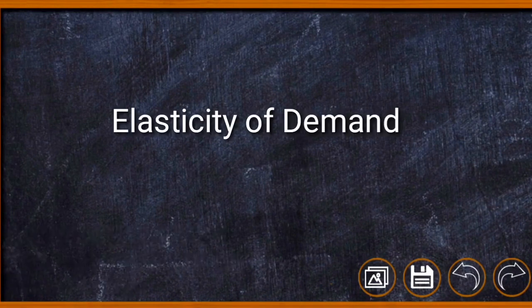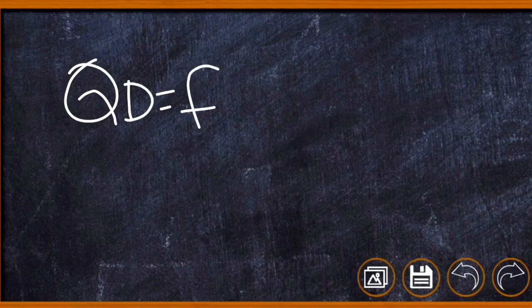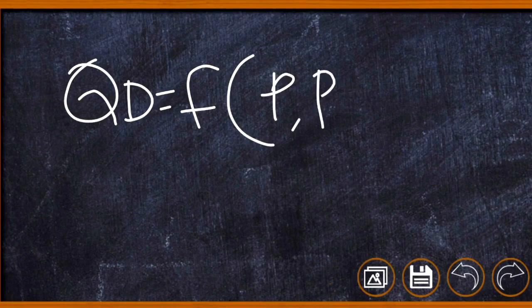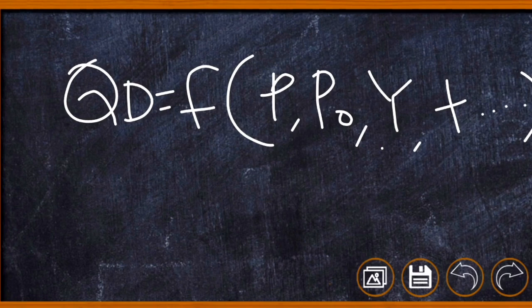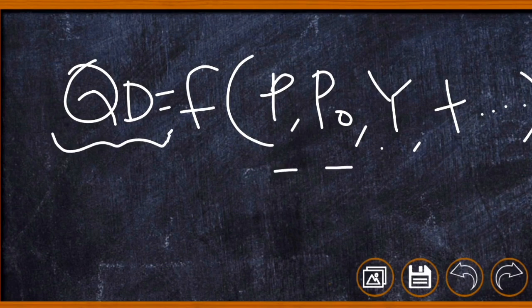Hello friends, in this video we are going to learn the concept of elasticity of demand. In the basic demand function explained in our previous video, the quantity demanded of a commodity is a function of price of the commodity, price of related commodities, income of the consumer, taste and preference of the consumer, etc. Quantity demanded is the dependent variable and all other variables are independent variables.